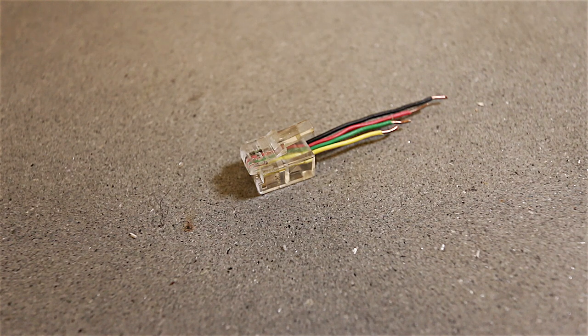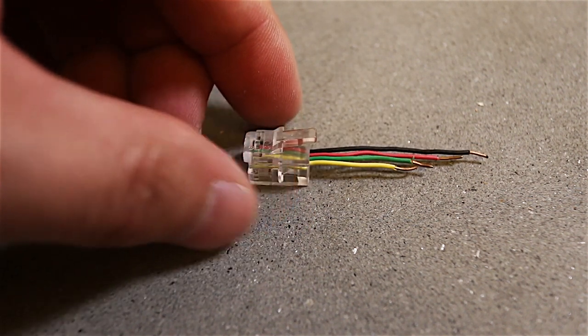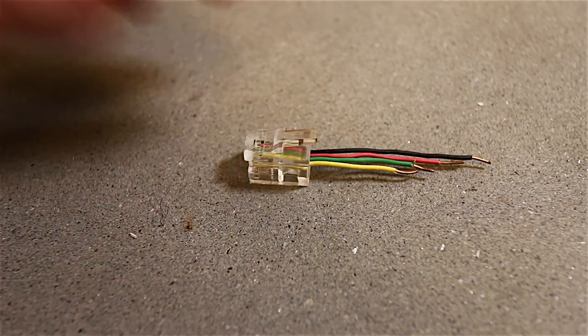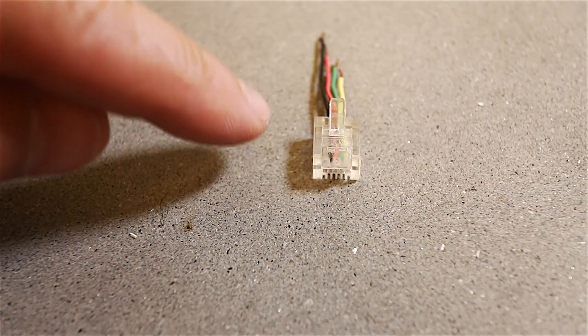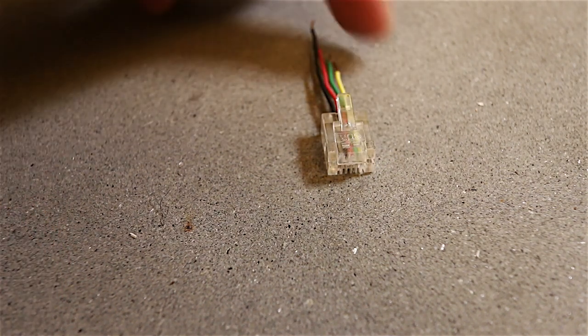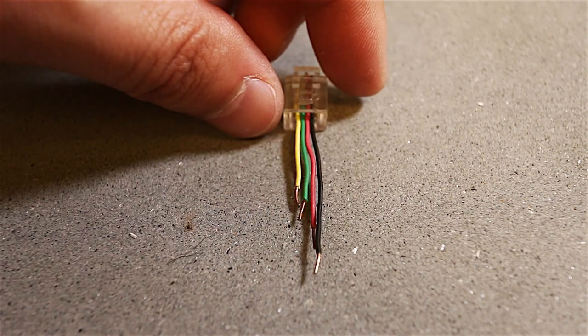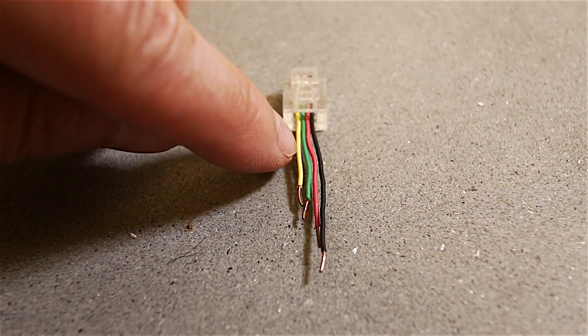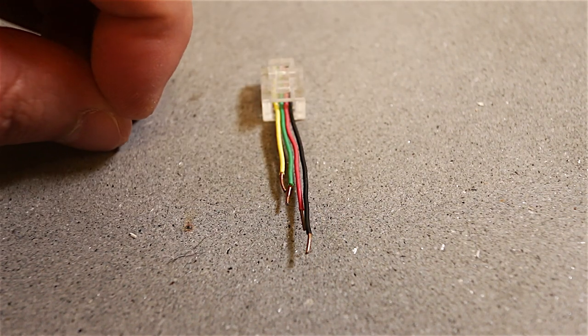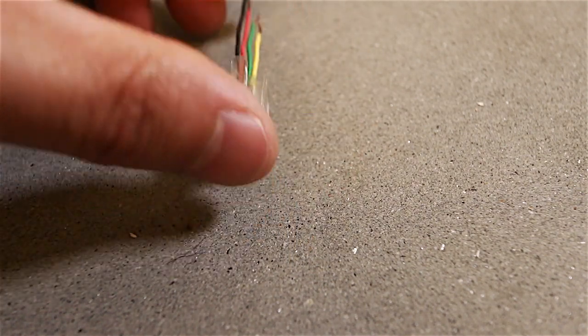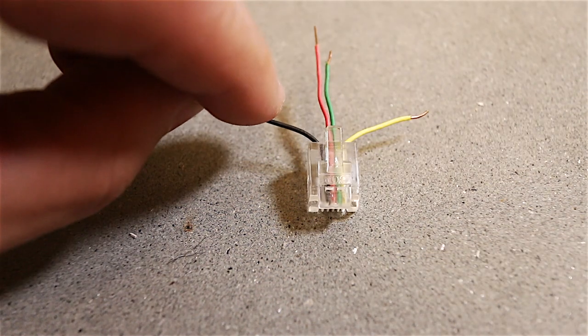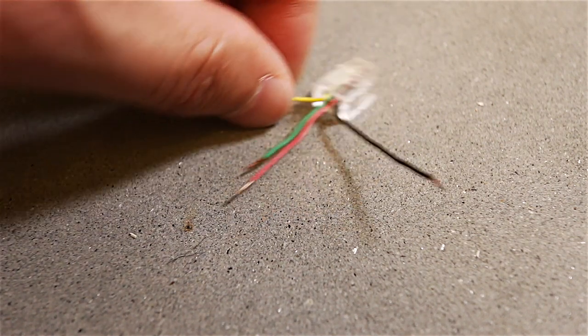If we take a look at a standard phone jack, you'll notice that the typical traditional color is black, red, green, and yellow. That's basically connected with the black on the left and yellow on the right when looking at the front of it. The tip in the ring or line one are the two center ones, and then line two are the two outer ones. If you just had a two line phone or a single line phone, you would do the green and the red. If you have a fax line, you usually do the yellow and the black.